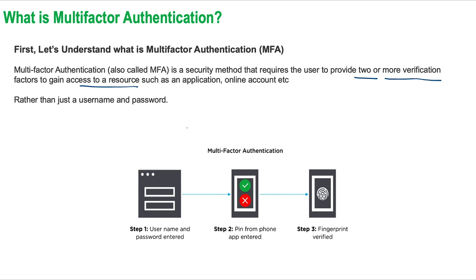As we can see in this diagram, the user is asked to provide the username and password as a first factor, the OTP as a second factor, and the fingerprint biometric as the third factor. So user ID and password, then PIN, and then fingerprints.